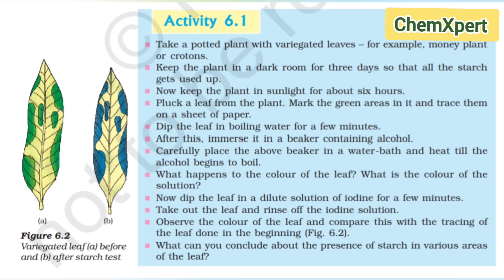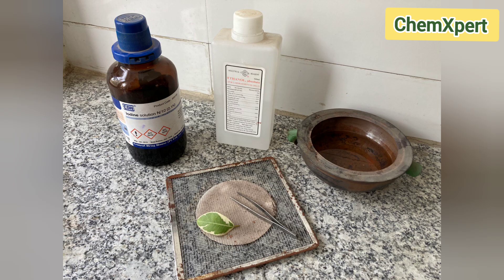In this video we will perform activity 6.1 from Class 10 Science, chapter Life Processes. For this activity we require an iodine solution, ethanol, a water bath, and a variegated leaf.